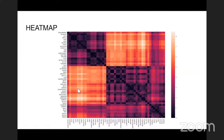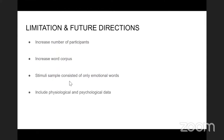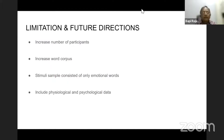For future directions, we intend to increase from 50 to more participants to get better trend estimates. We will also increase the word corpus — datasets like ANEW have taken many more words. Our study focused only on emotional words, but we can include words of varying concreteness. We also aim to include physiological and psychological data.